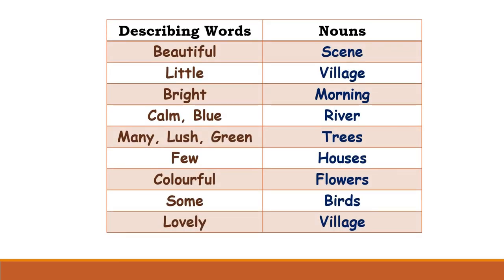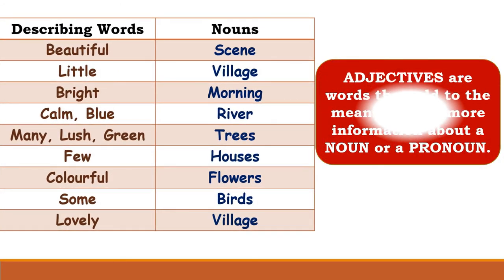Now let's see what is the function of these words. If you see the second column, there are nouns, and if you see the first column, these are words which are describing those nouns. So beautiful describes scene, little describes the village, bright describes the morning, calm blue describes the river, many lush green describes the trees, few describes the houses, colorful adds more information about the word flowers, some gives us more information about birds, lovely gives more information about the village. So these are all describing words — they give us more information about the nouns in the passage.